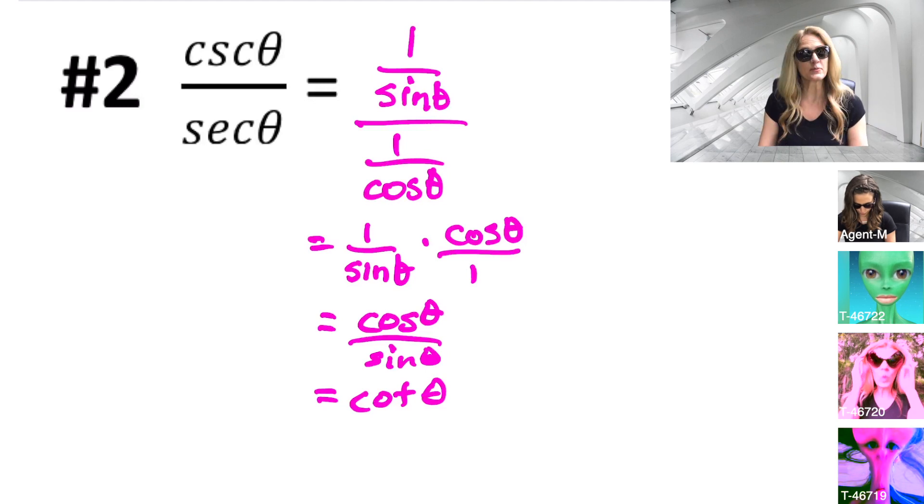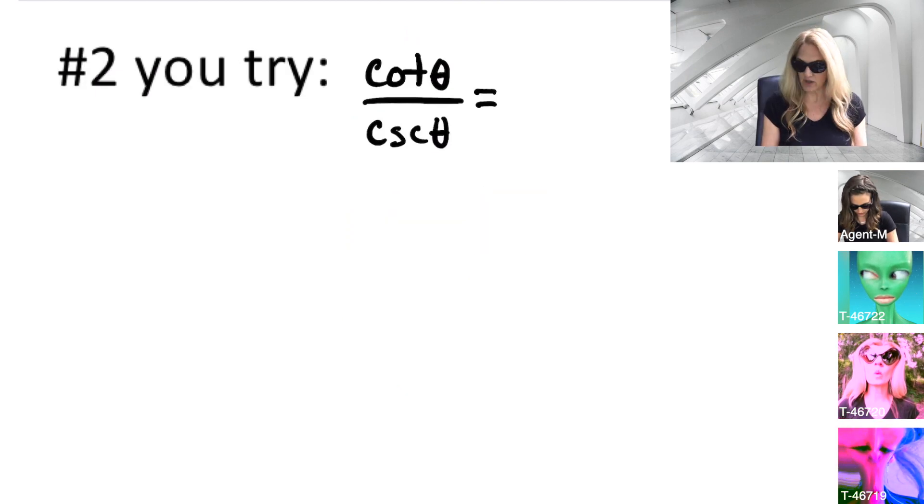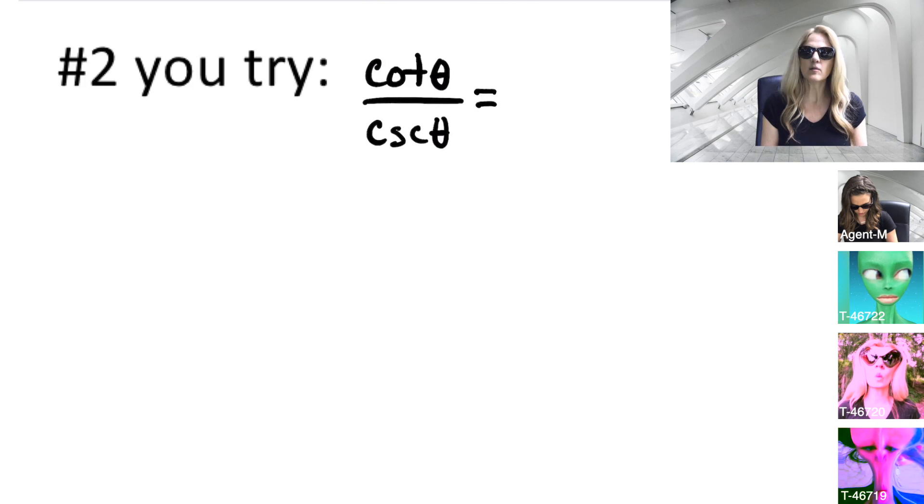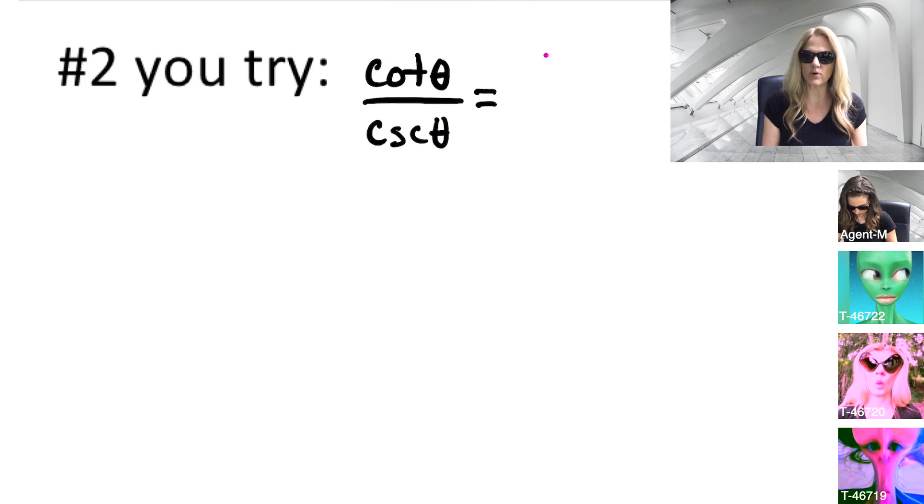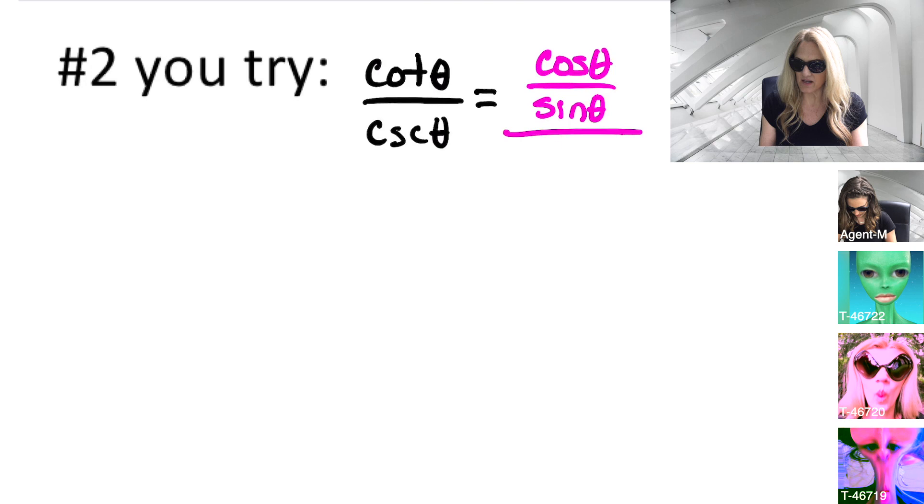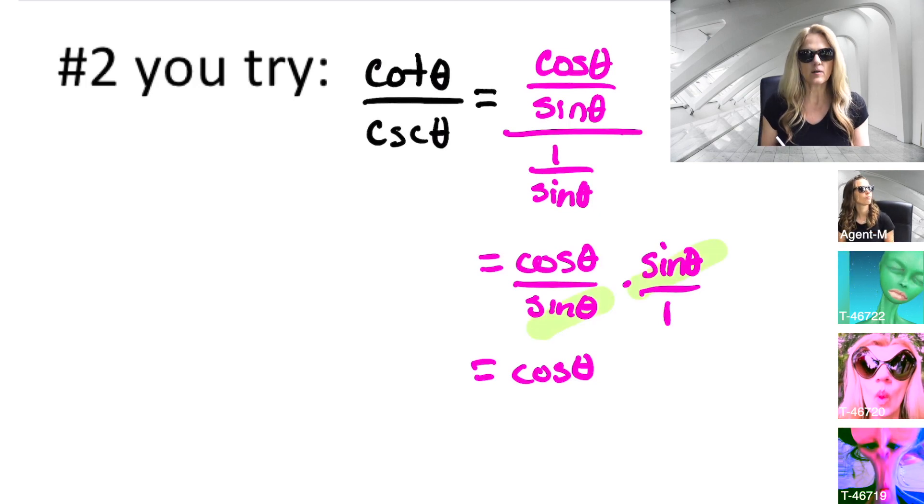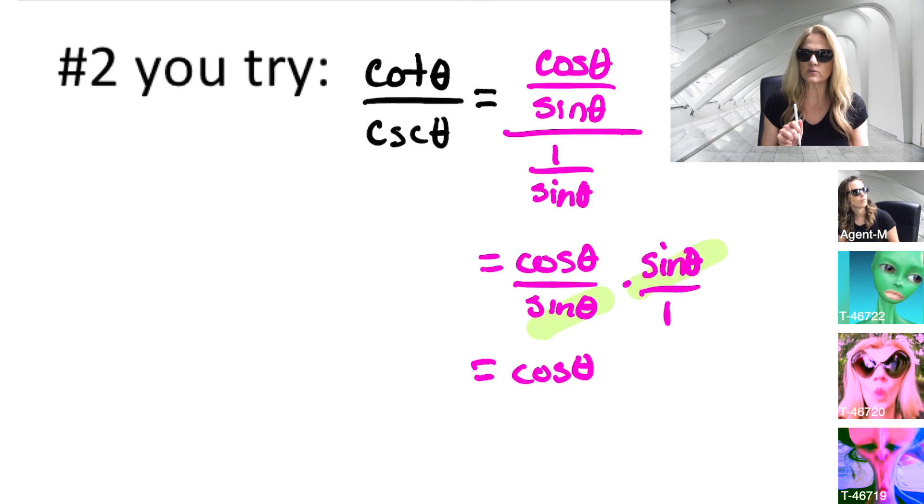Math in black. Trainees, will you be fooled? Try the next problem. Trainees, I hope you were successful. You should have gotten cosine theta. But did you make sure to show the recipe for taking off its disguise? Let's check. Cosine divided by sine is cotangent. One over sine is cosecant. Multiply by the reciprocal of the second fraction. Sine theta divides out with sine theta. Therefore, we have cosine theta. Please double check that you have the correct recipe, or you will not pass this training phase.